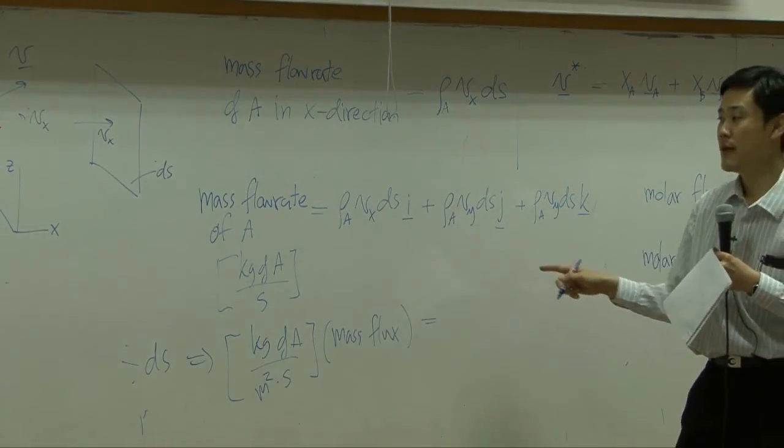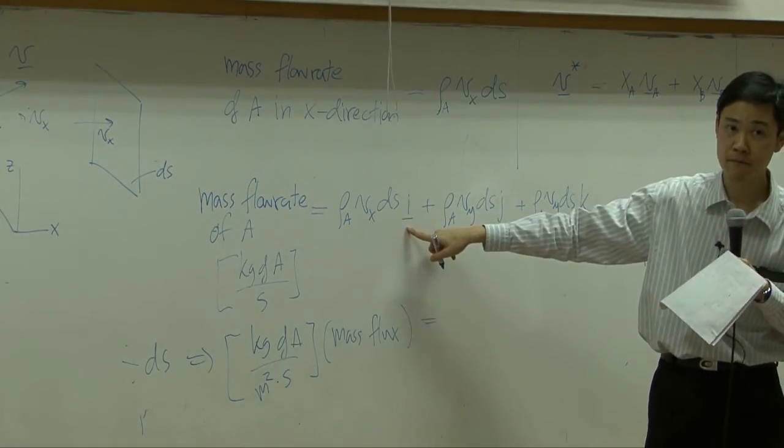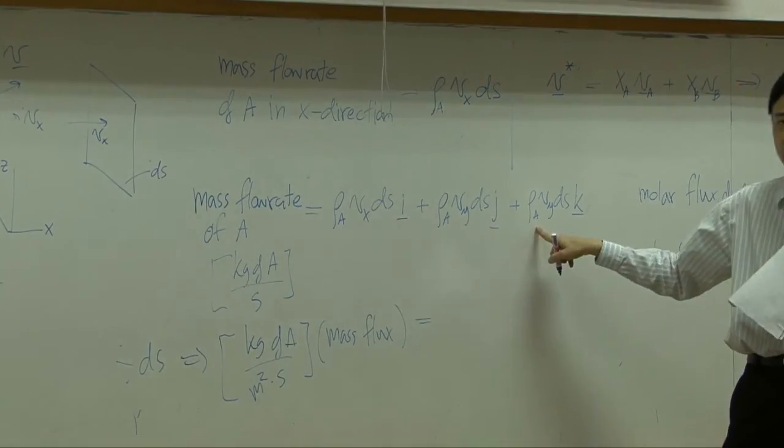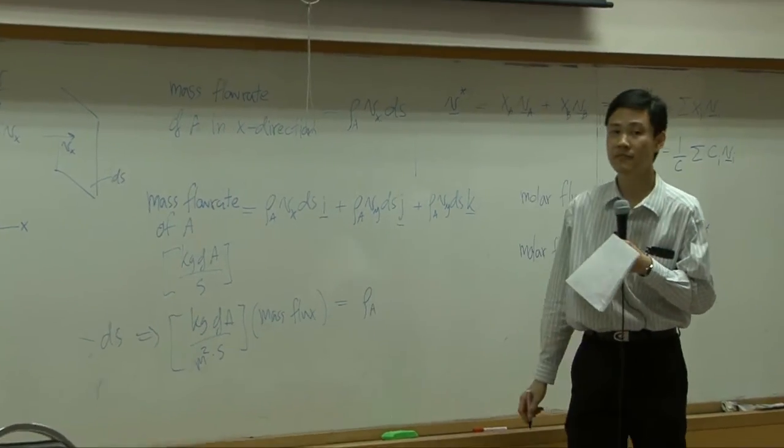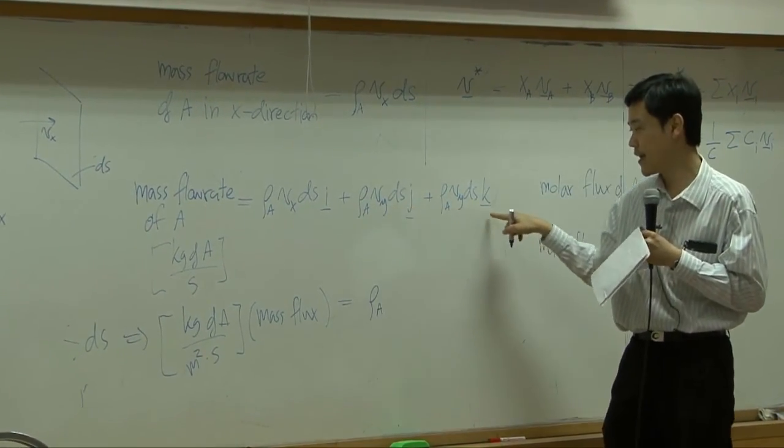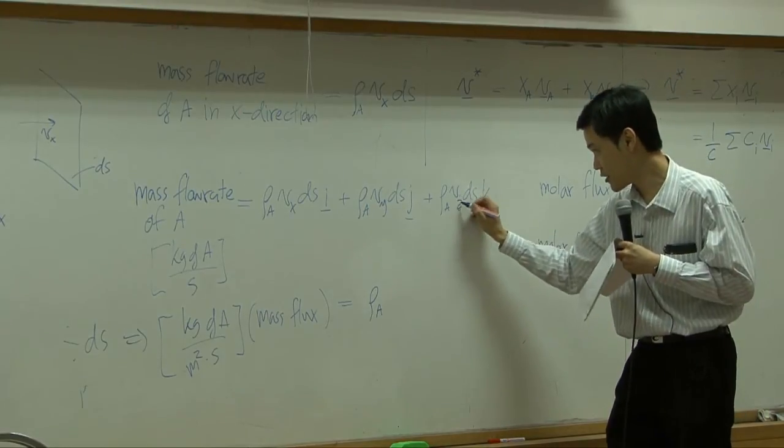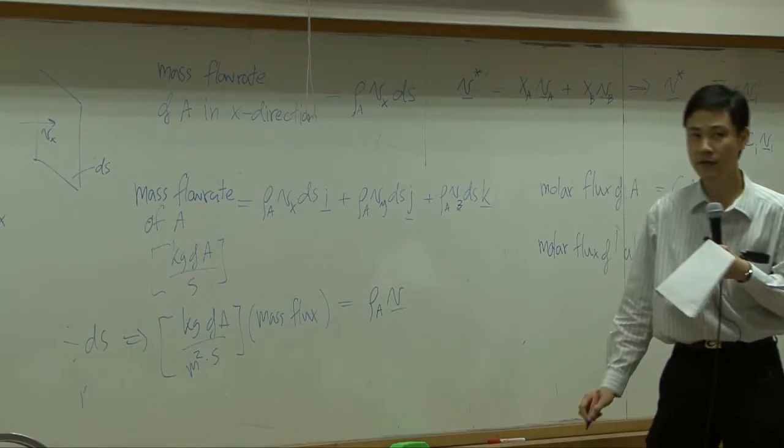Right? So you just cancel ds out, and you get rho A times velocity times unit vector. Rho A are common term, are scalar. So you have rho A, the rest would be Vx i times added by Vy j, Vz k, I'm sorry.